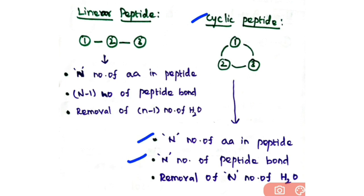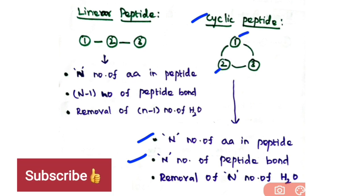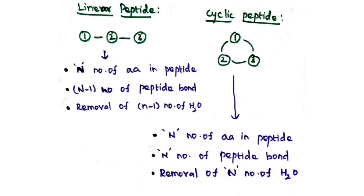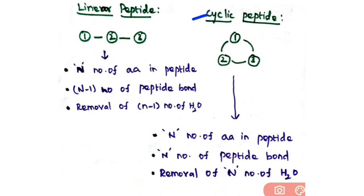In a cyclic peptide, if you have n amino acids, you have n peptide bonds. So if you have 3 amino acids, there are 3 peptide bond formations and removal of 3 water molecules. To calculate the molecular weight of a linear peptide: sum the molecular weights of all amino acids, then subtract (n−1) water molecules. For a cyclic peptide: sum the molecular weights of all amino acids, then subtract n water molecules.